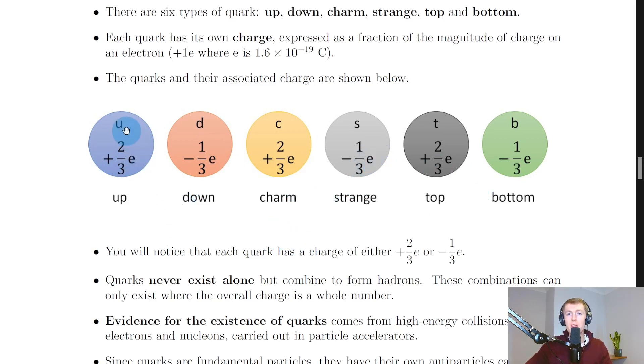down quark has a charge of minus one-third e. The charm quark has a charge of plus two-thirds e, whereas the strange quark has a charge of minus one-third e. And lastly, the top quark has a charge of plus two-thirds e, and the bottom quark has a charge of minus one-third e.